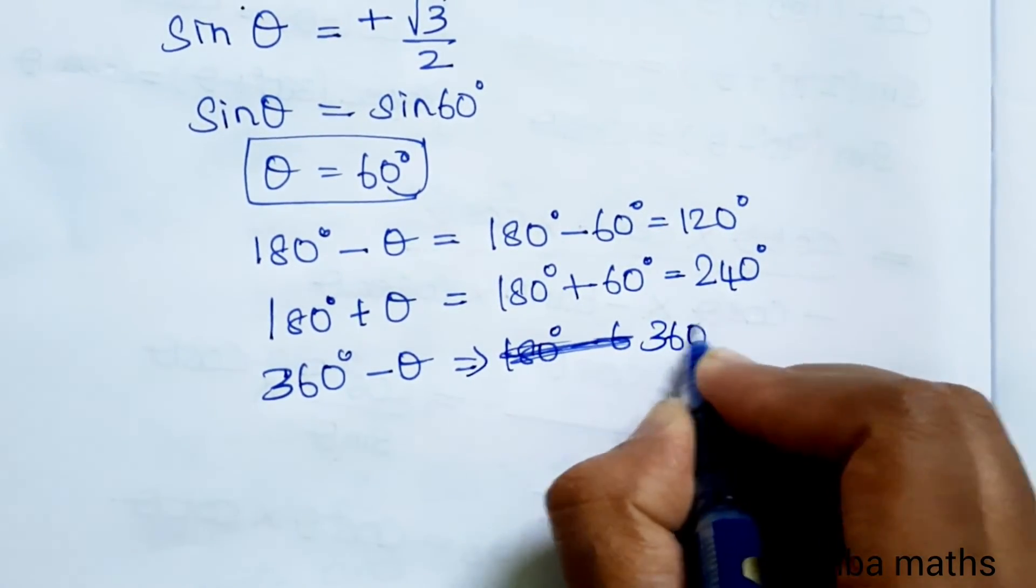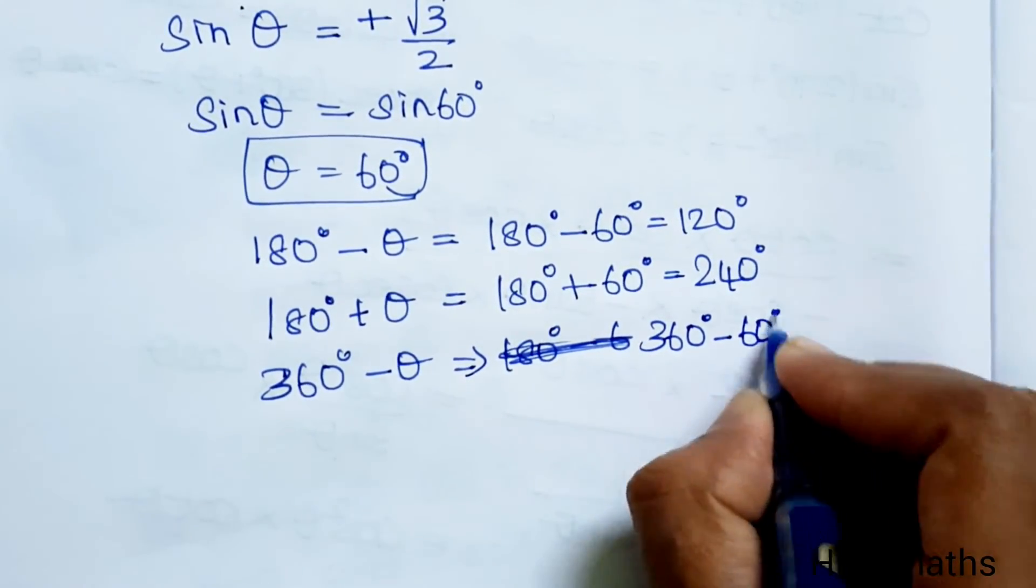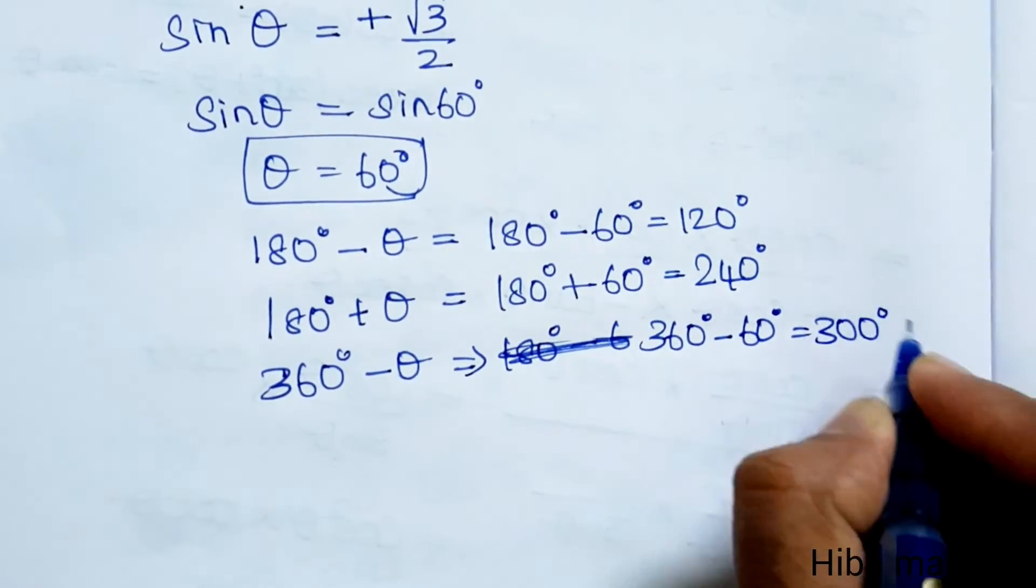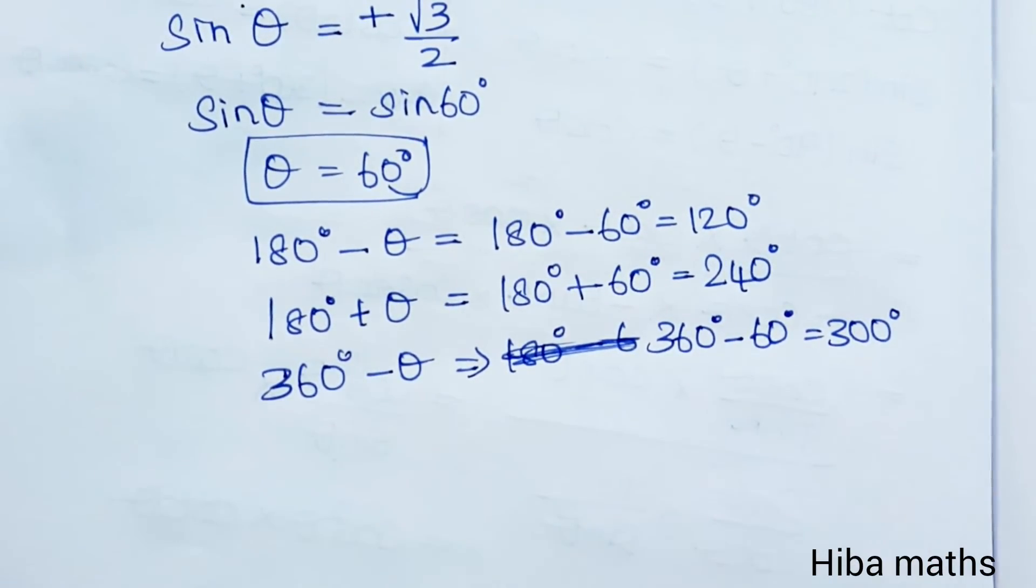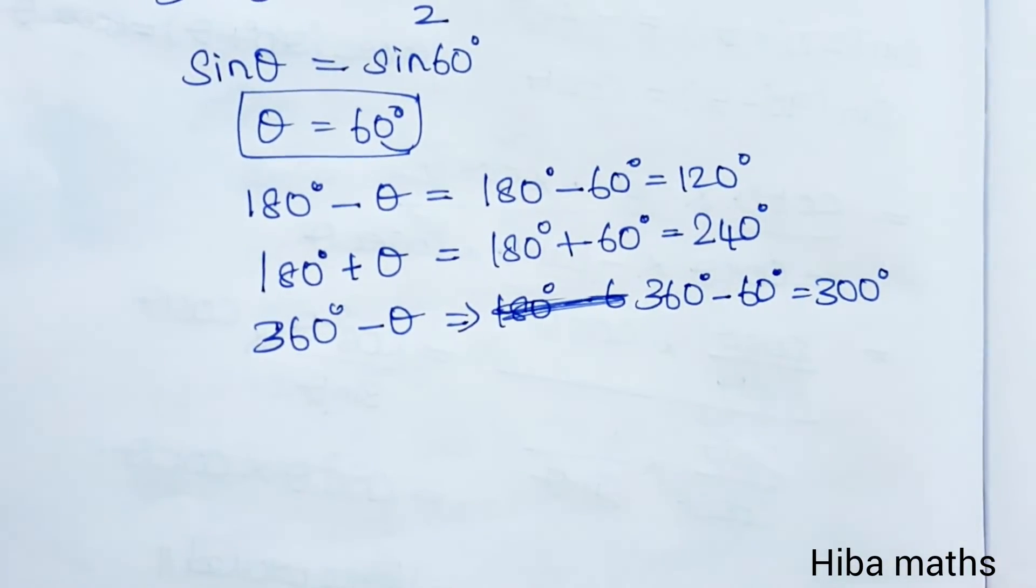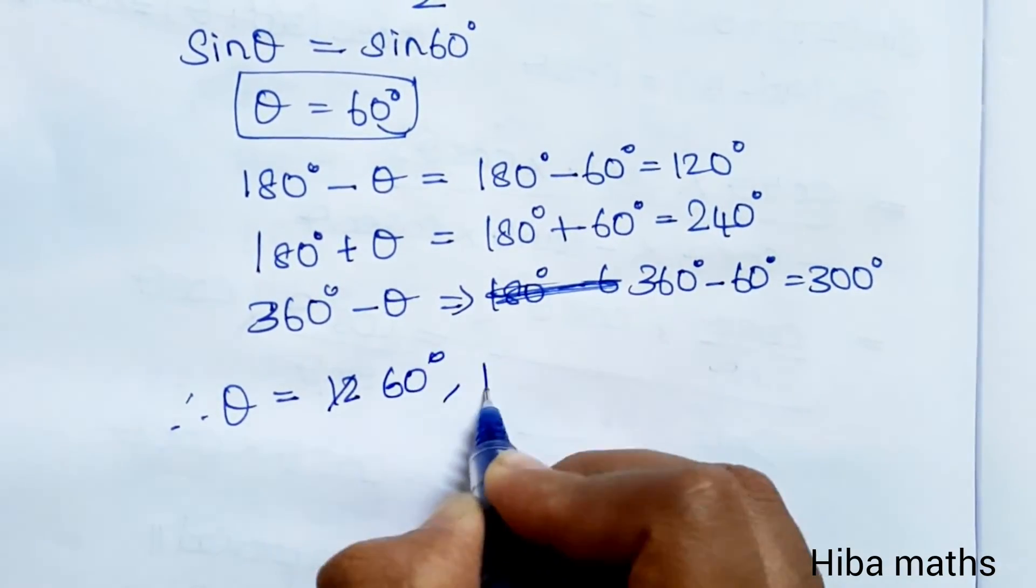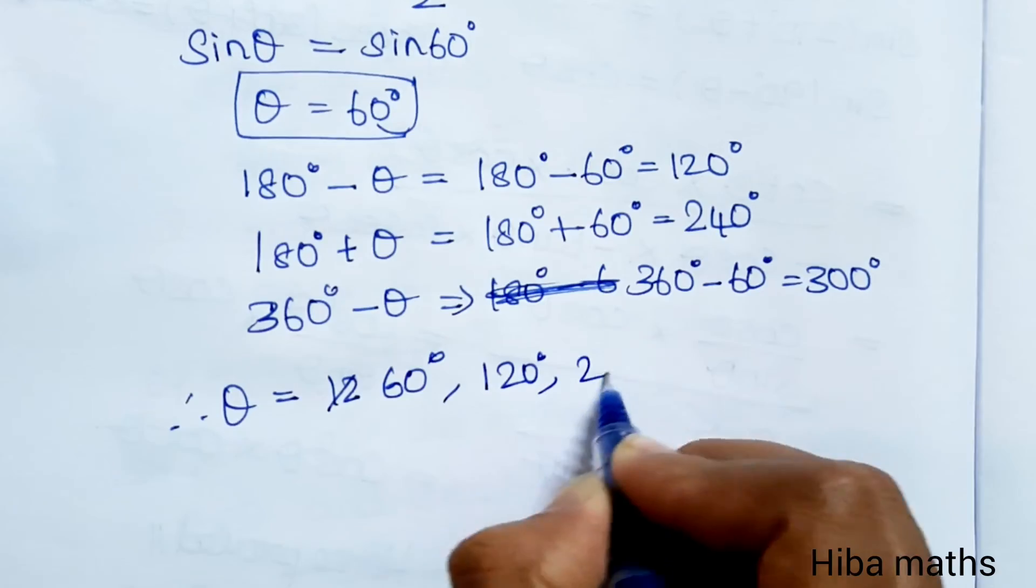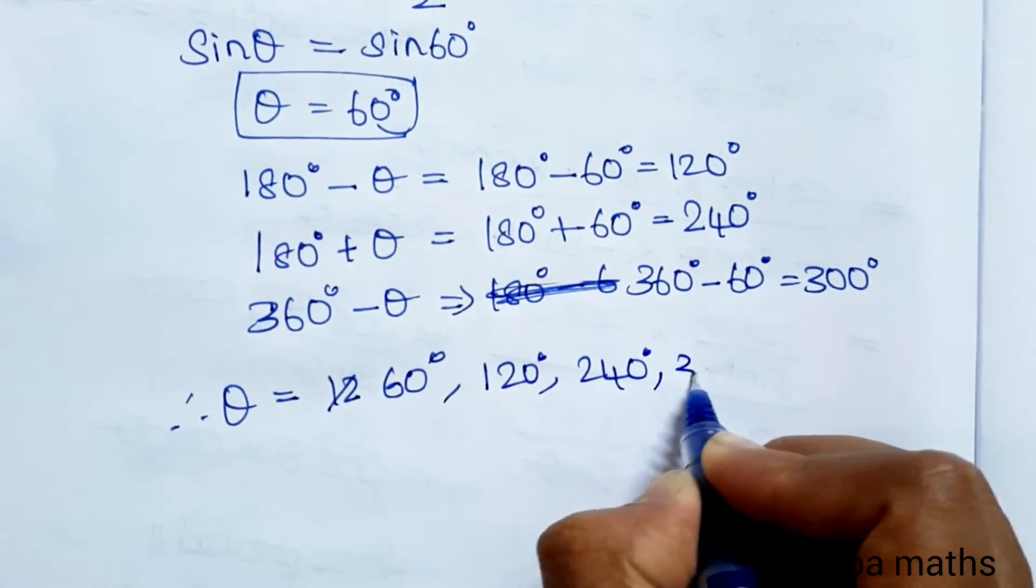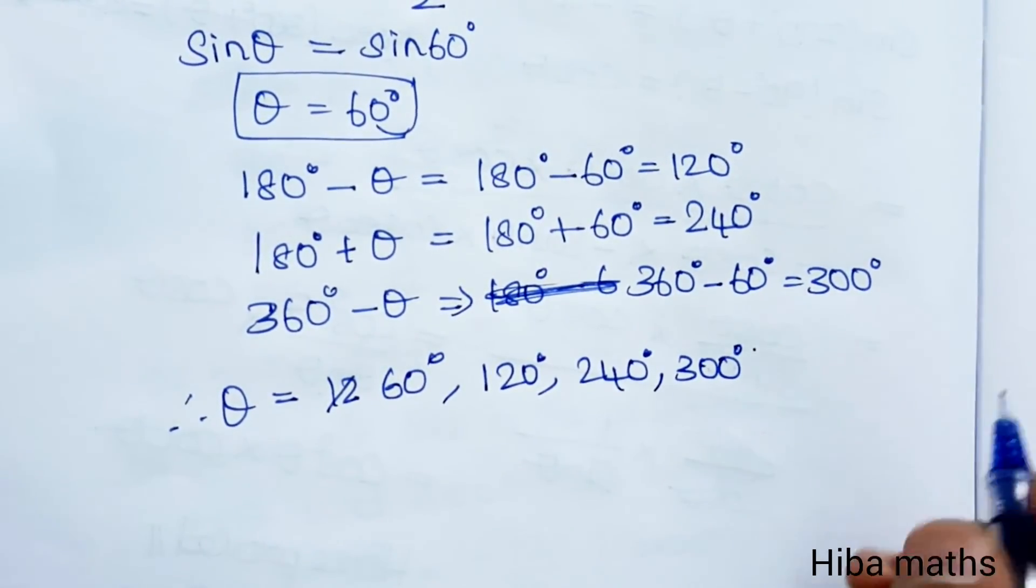These angles satisfy the equation. Therefore theta is 60 degree, 120 degree, 240 degree, and 300 degree. The book back answer is 60 degree and 120 degree.